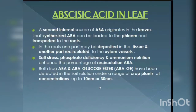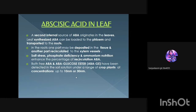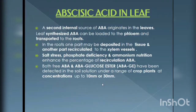Abscisic Acid in Leaves. Soil stress, phosphate deficiency, and ammonium nutrition enhance the percentage of recirculation of abscisic acid. ABA and ABA glucose ester have been detected in the soil solution under a range of crop plants at concentrations up to 10 nM or 30 nM.